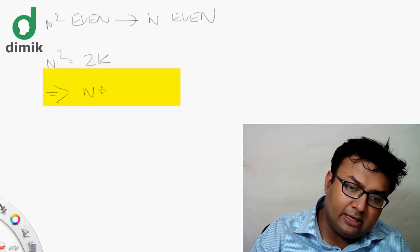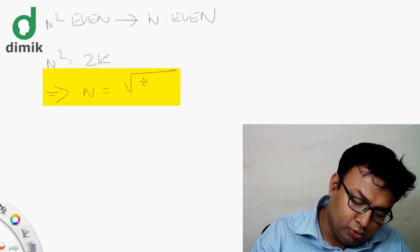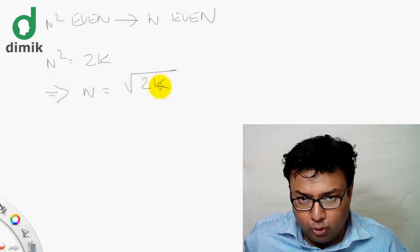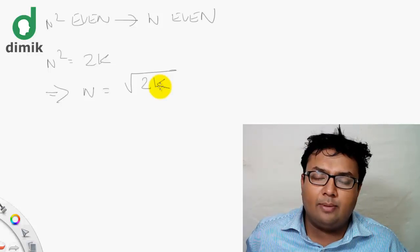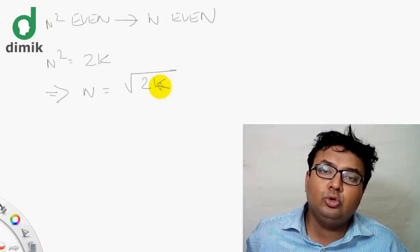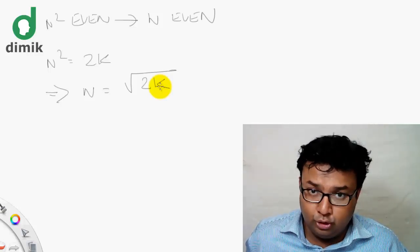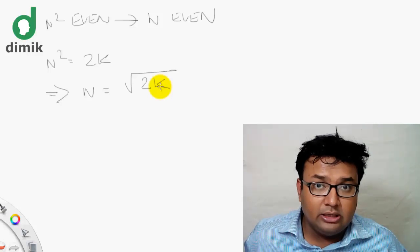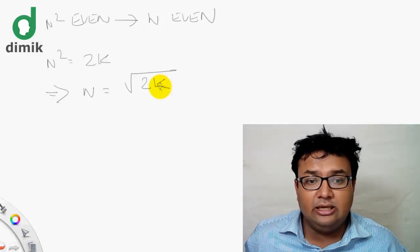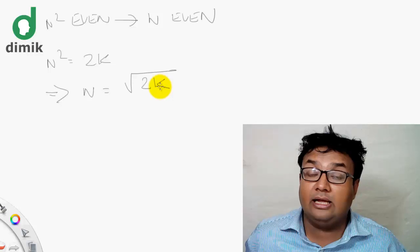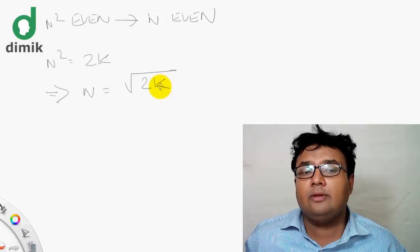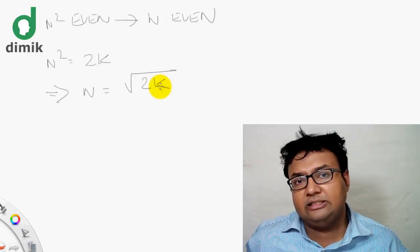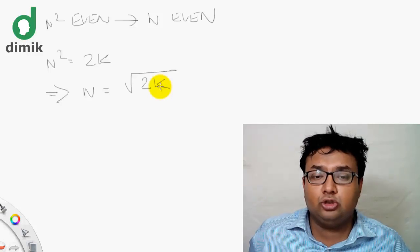We have to write this line that n squared equals 2k. I will write that n equals root over 2k. This root over 2k is the same. This is the guarantee that n squared is even and n is even. The number n squared is an integer, and n squared is even.